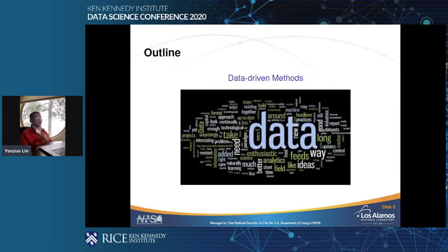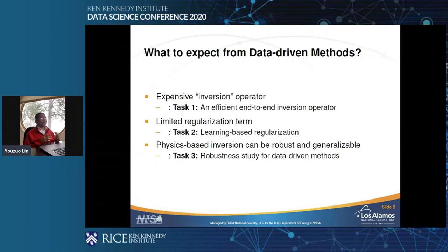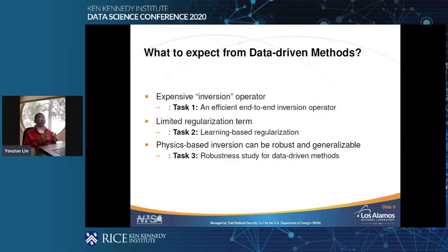Now let's switch to the machine learning part. Looking at the three aforementioned challenges, we developed a couple of different methodologies to alleviate those difficulties. To resolve the computational issue, we developed an end-to-end regression operator to help with inversion. To resolve the limited regularization issue, we developed a learning-based regularization to better learn the prior and incorporate it into the inversion procedure. The third part — how to maintain robustness when developing a machine learning method — is actually the focus of this work.